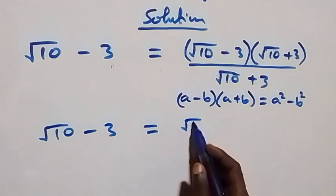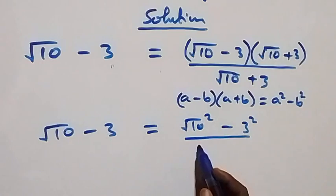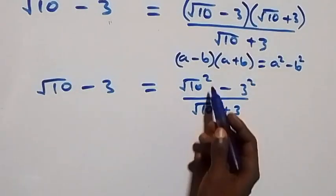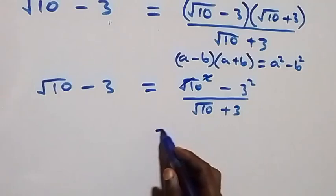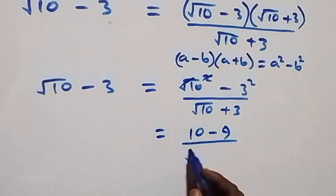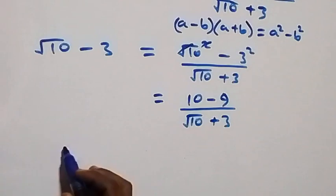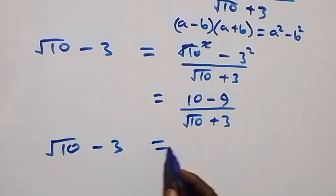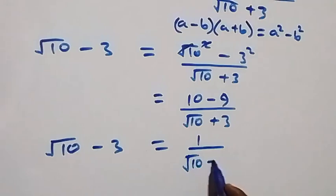So we get (√10)² minus 3² over (√10 + 3). The square root and square cancel, giving us 10 minus 9 over (√10 + 3), which equals 1 over (√10 + 3). Therefore, √10 - 3 equals 1 over (√10 + 3).